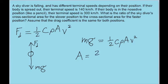So this gives us an answer of 2mg divided by c, the drag coefficient, the density ρ, and v squared, where v in this case is the terminal speed of the diver.